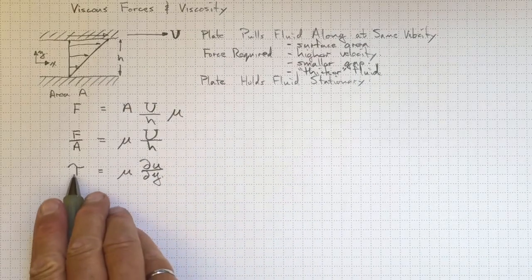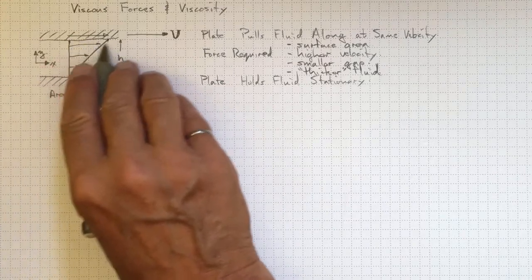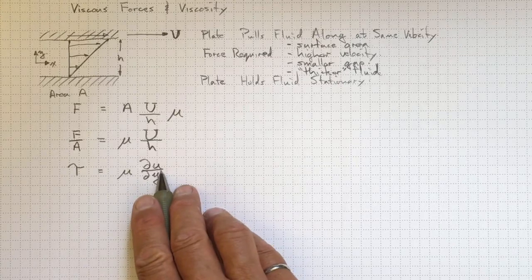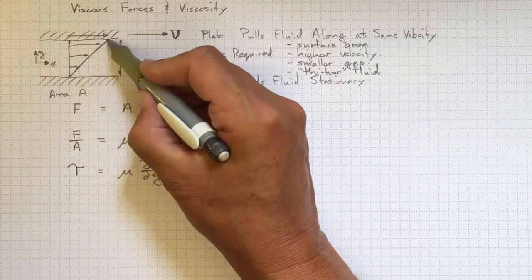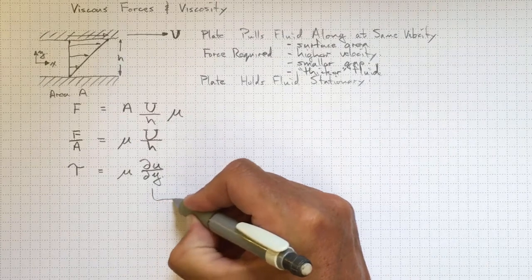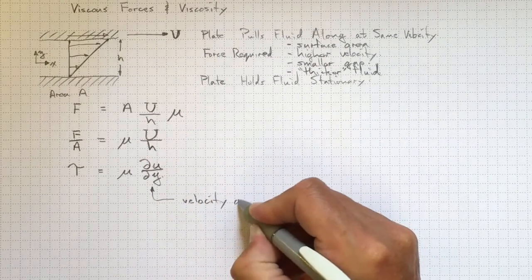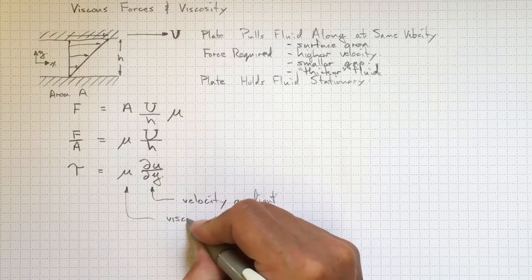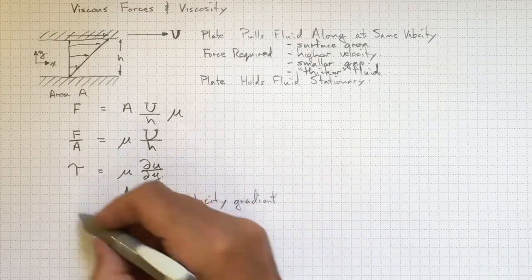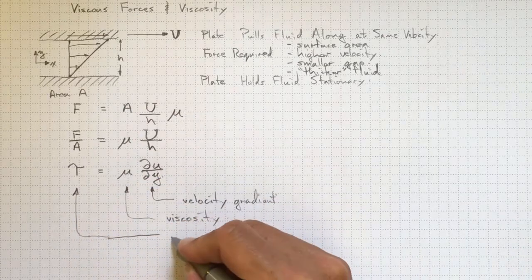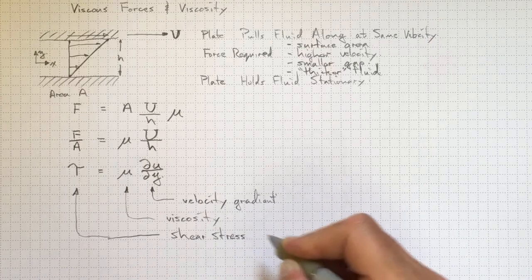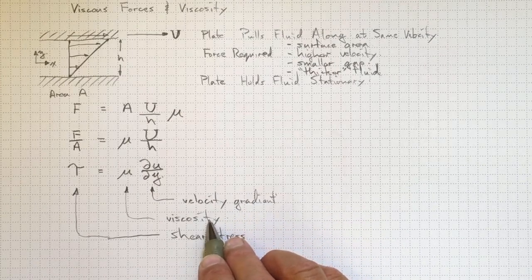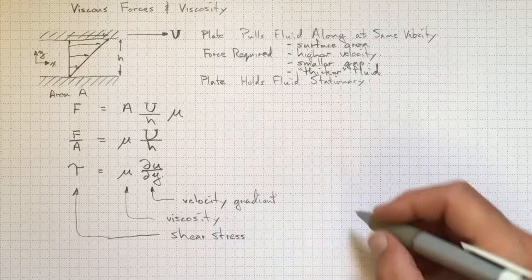So what this tells us is that the shear stress that we expect is going to depend on this constant viscosity and the gradient of the velocity. So there's the velocity gradient. That's our viscosity. And this is the shear stress. And that relates that stress to this velocity gradient by way of this constant, which turns out to be very close to a constant, the viscosity.